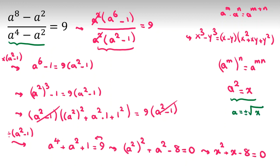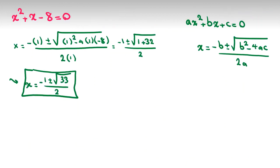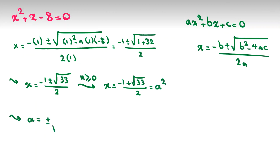a is plus minus square root of x. x should be at least 0 because x is a squared and a is a real number. Let's check this. Because x has to be positive or non-negative, the only possible case is negative 1 plus root 33 over 2. Since it is a squared, a will be plus minus square root of negative 1 plus root 33 over 2.